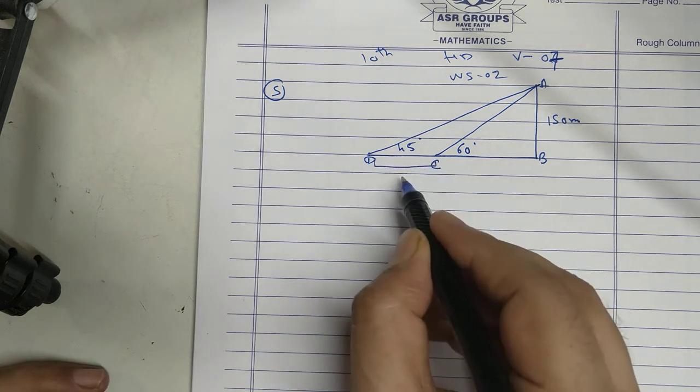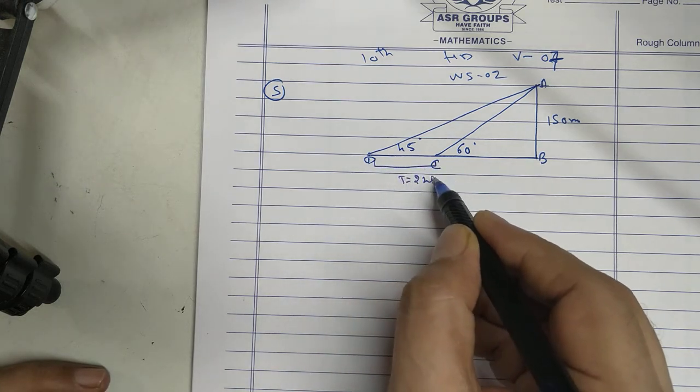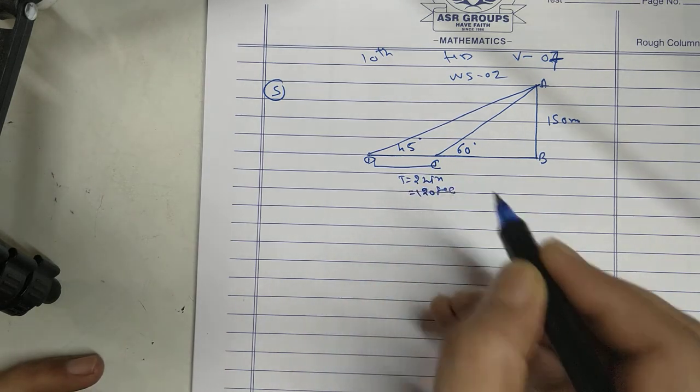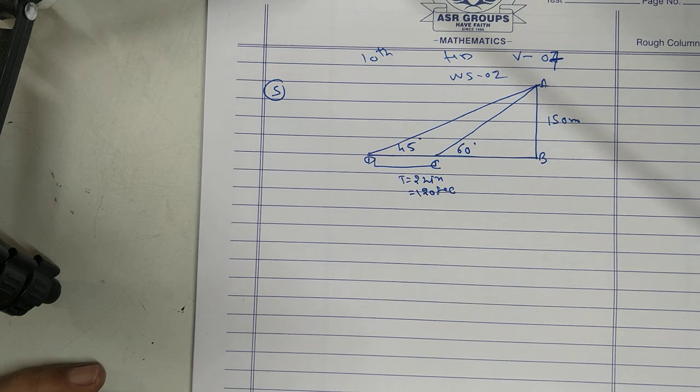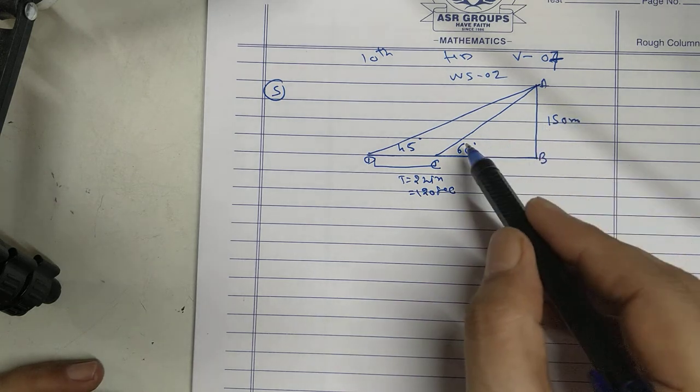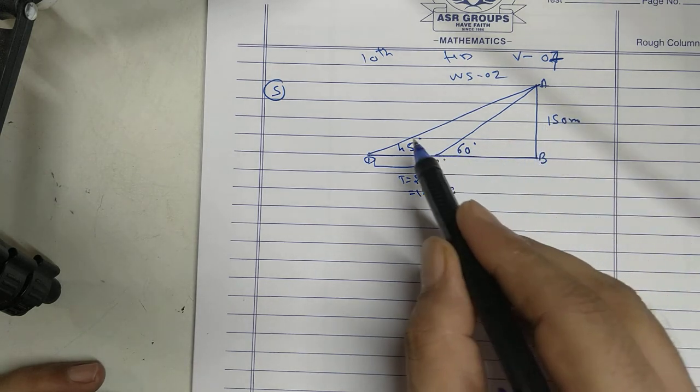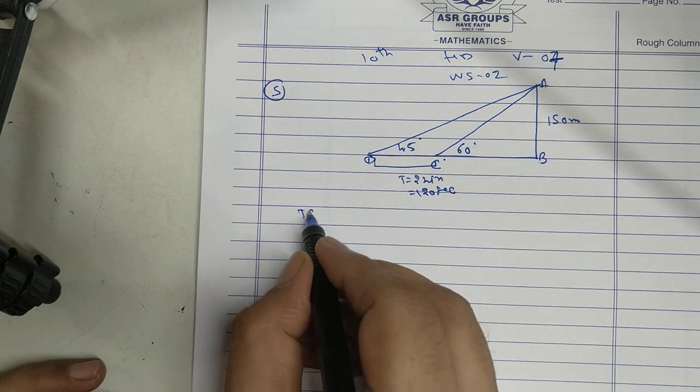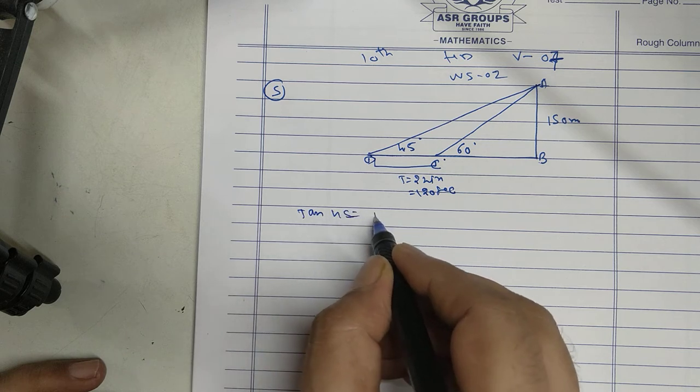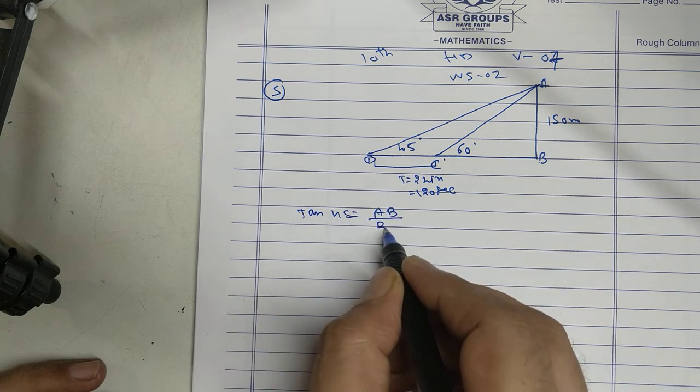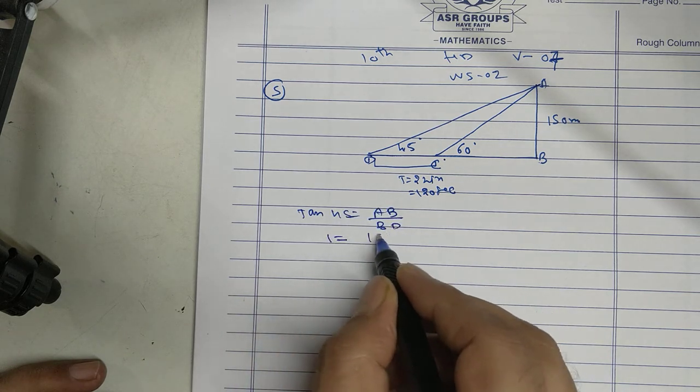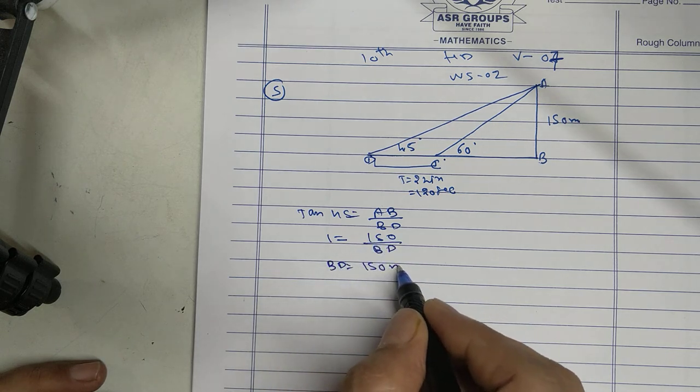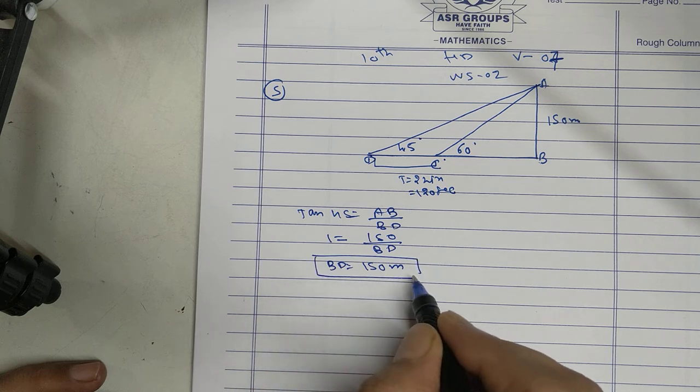This time takes 2 minutes, that is 120 seconds. Find the speed. I use tan 60, I will get BC. I use tan 45, I will get BD. Tan 45 is AB upon BD, 1 equals 150 upon BD. BD is 150 meter.